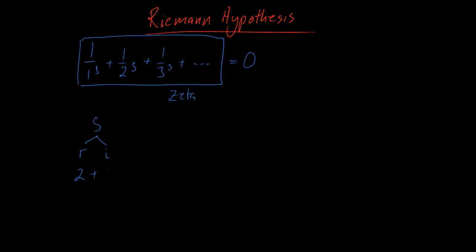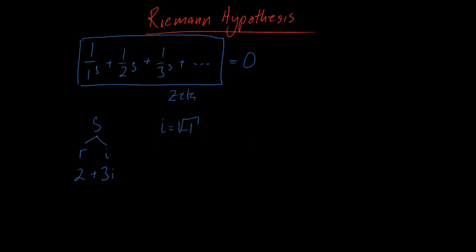The real part is just a number that we know, like 2, plus an imaginary part, for example 3i. So now we need to know what i is. I is simply defined as the square root of negative one. You might ask: why do we need a square root of negative one?